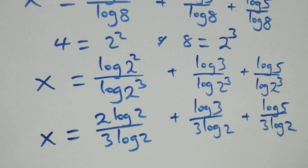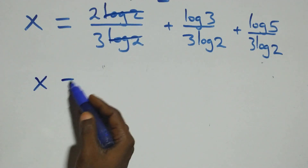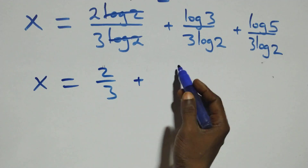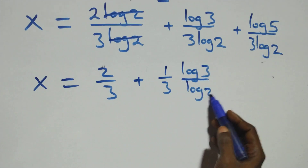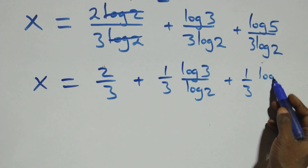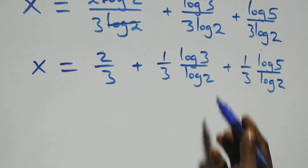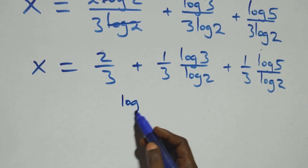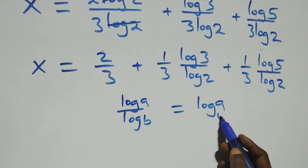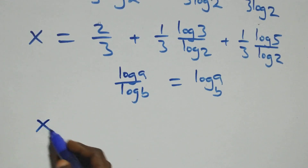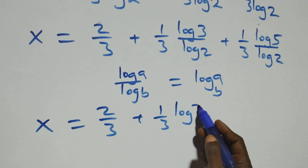From here, log two cancels each other and two over three is left. At this, x equals to two over three, plus one over three times log three over log two, plus one over three times log five over log two. Then here we apply the change of base: when we have log a over log b, this is the same thing as log a to base b.